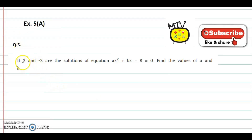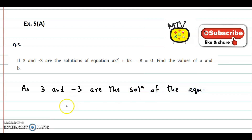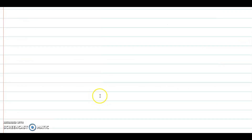We now discuss question number 5. If 3 and minus 3 are the solutions of the equation ax squared plus bx minus 9 equal to 0, find the values of a and b. So 3 and minus 3 are the solutions of ax squared plus bx minus 9 equal to 0.